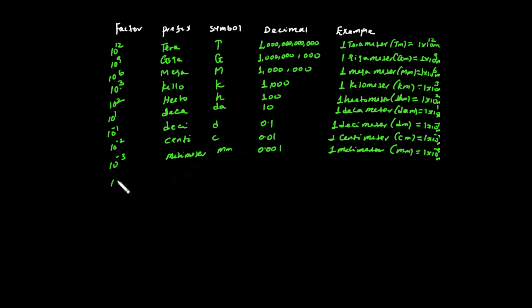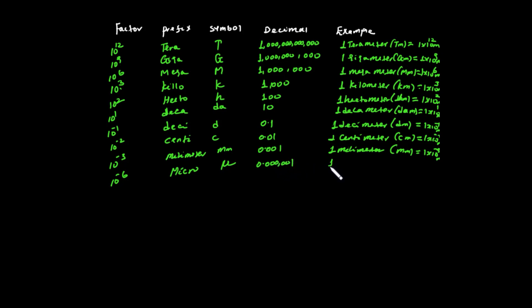10 to the power of minus 6 is Micro, symbolized by the Greek letter mu (μ). Its decimal value is 0.000001. 1 micrometer is equal to 1 times 10 to the power of minus 6 meters.